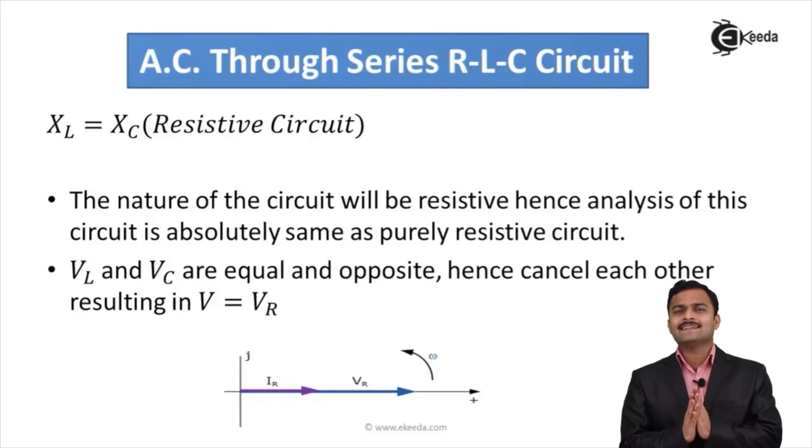These two will cancel each other leaving behind only VR. Applied voltage is same as VR and current and voltage both will be in phase, giving rise to a nature of circuit as resistive having phase angle 0. Here Vc and Vl will cancel each other. Ultimately, total voltage is nothing but voltage across resistance which will come in phase with current supplied, giving rise to phi as 0 degrees.